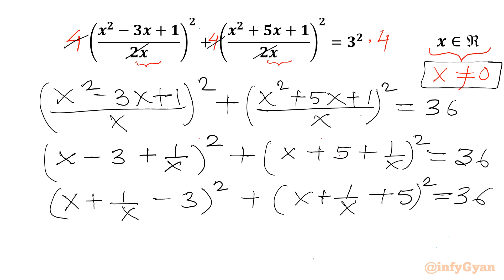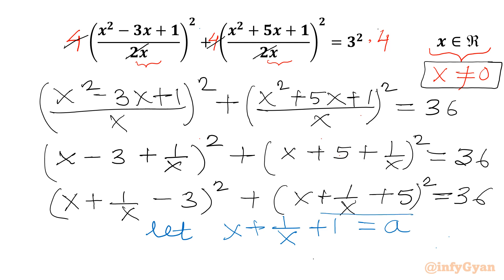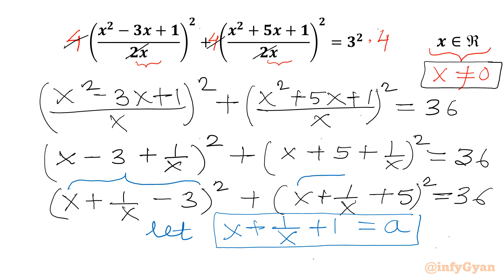Now I will use substitution. Let us consider x + 1/x + 1 = a. So the first bracket will give us a - 4, and the second bracket will give us a + 4.